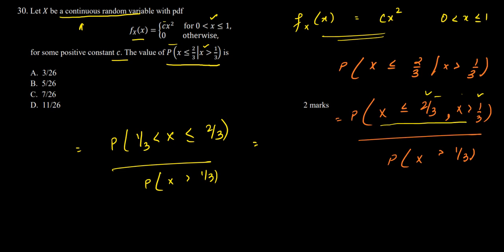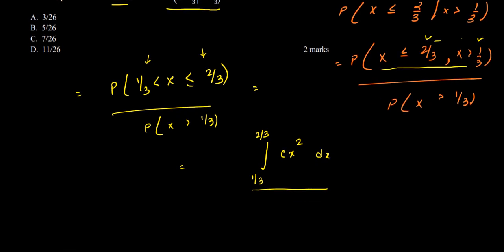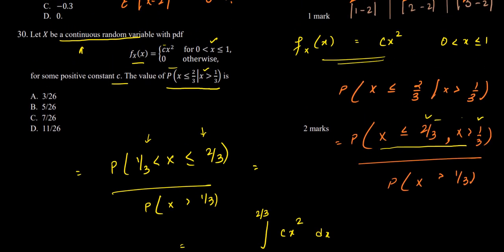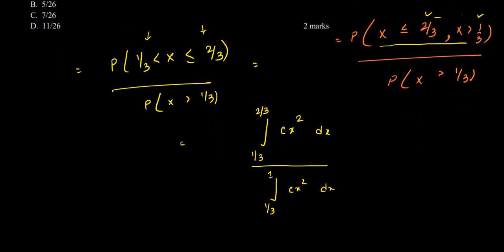Since we have a continuous random variable, we integrate the function to get probabilities. The numerator is the integral from 1/3 to 2/3 of Cx² dx. For the denominator, P(X > 1/3) is the integral of Cx² dx from 1/3 to 1. The upper limit is 1 because the range of x cannot exceed 1, as specified in the PDF.